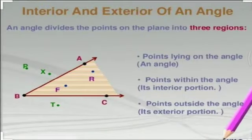The first topic is interior and exterior of an angle. Interior means the inner part of your angle and exterior means the outer part of your angle. As you can see in the figure, the shaded part is known as the interior part. The interior points here are point F and point R.